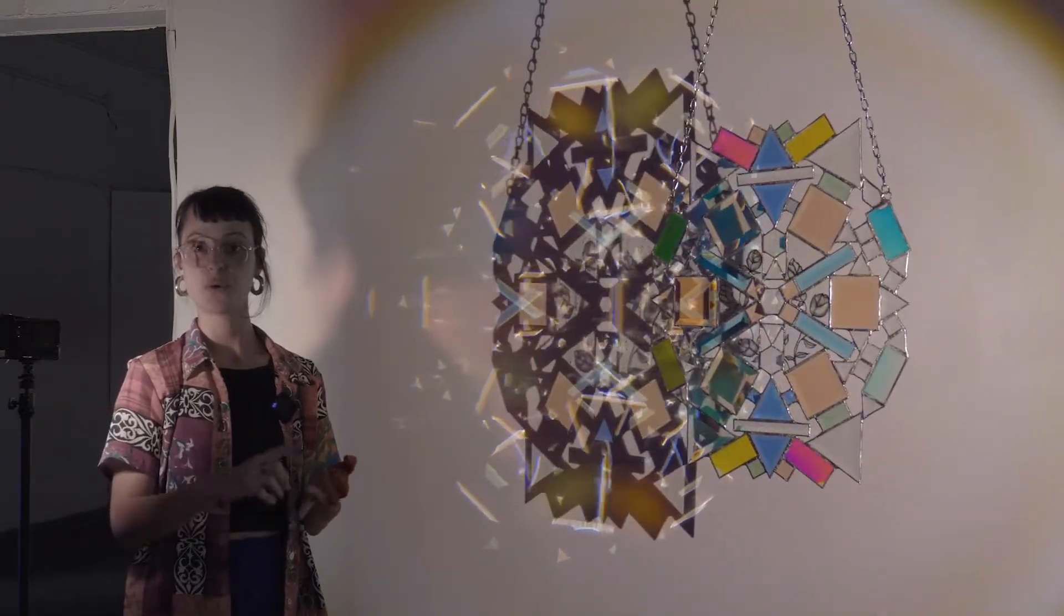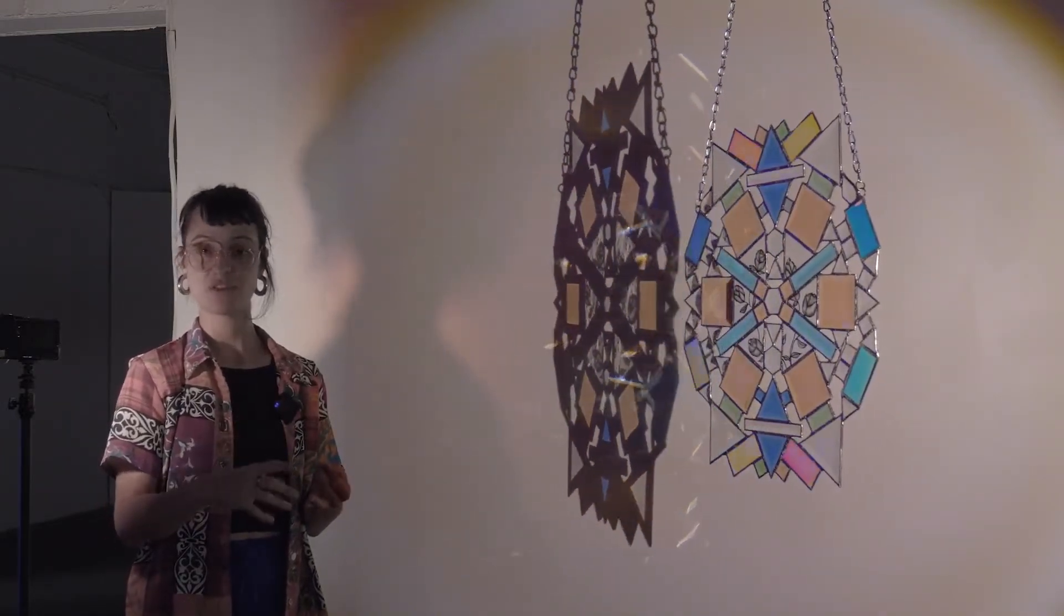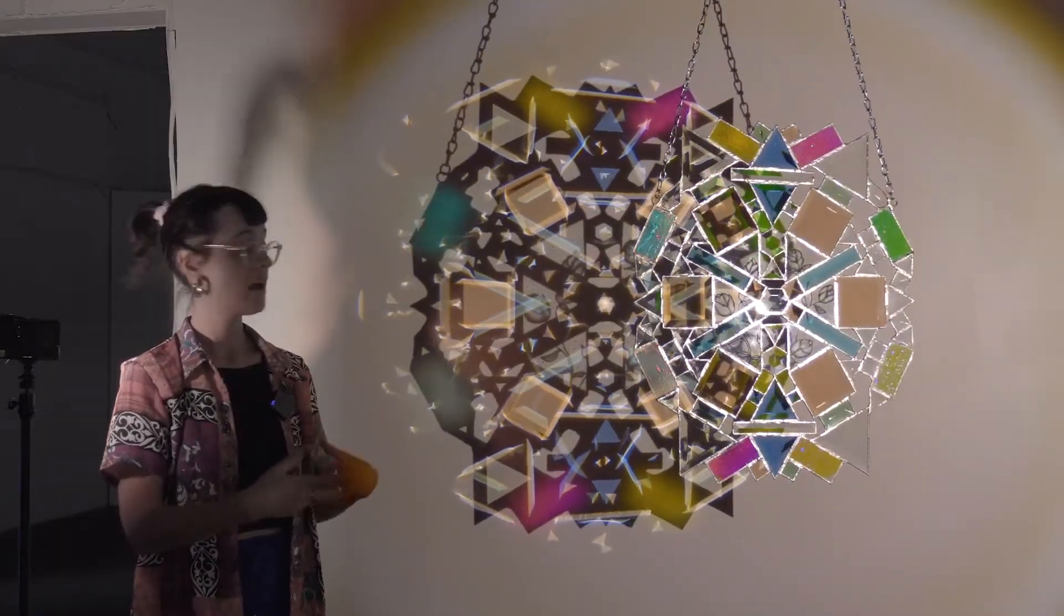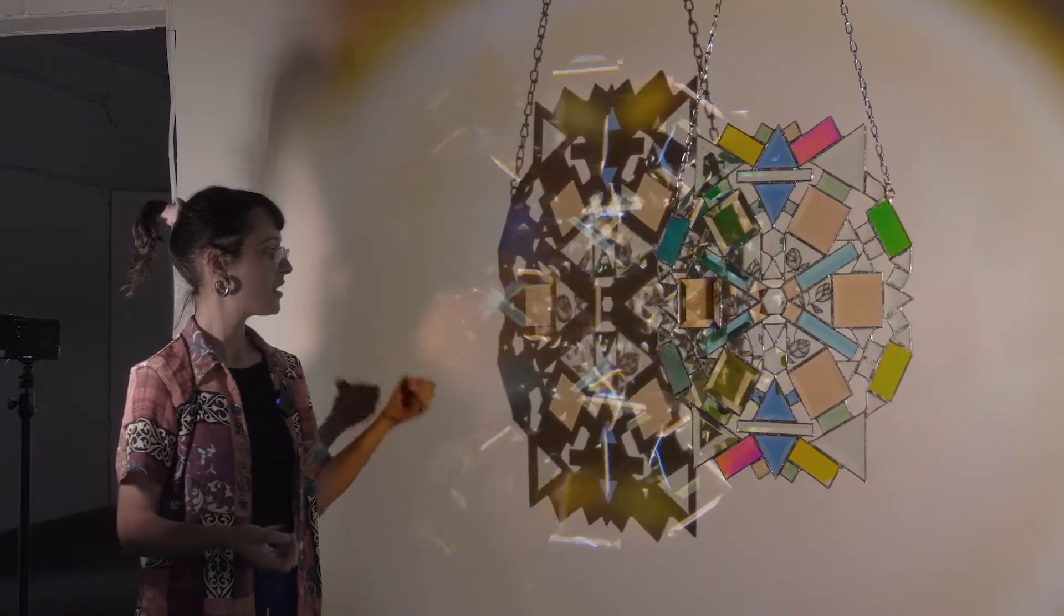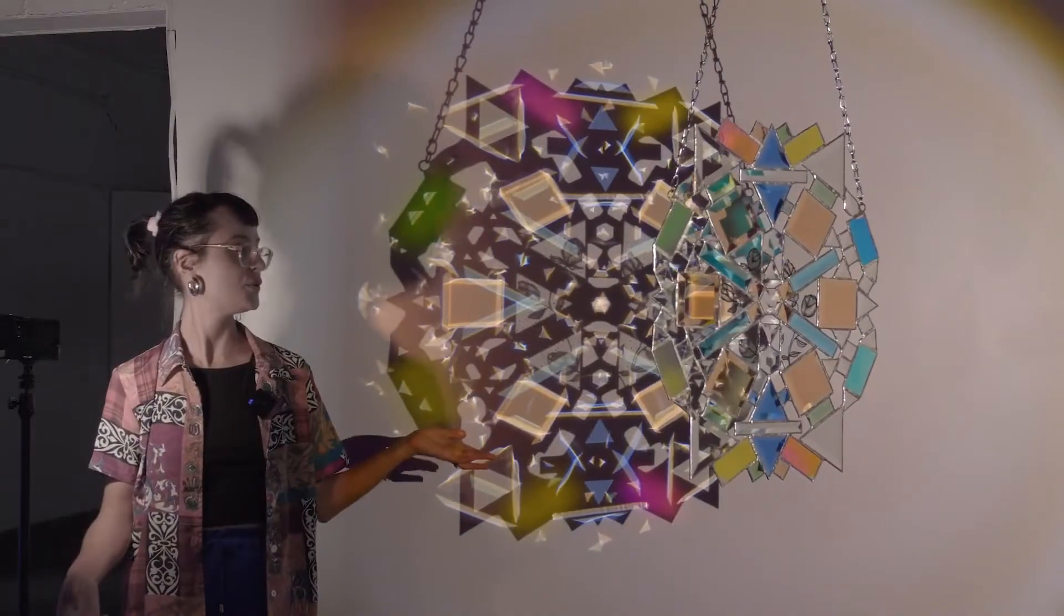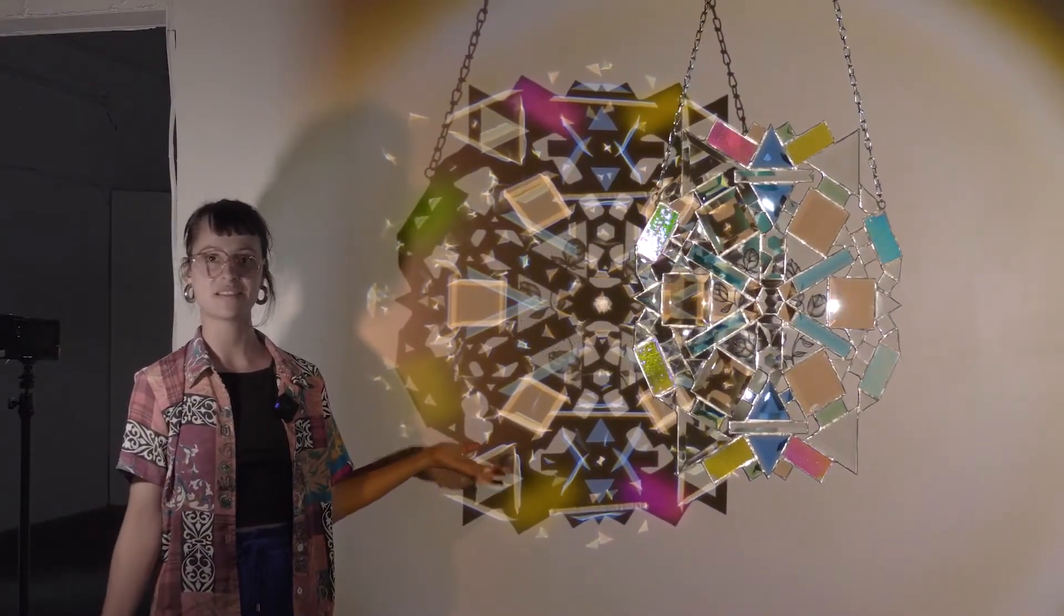So we have two 3D dimensions and the fourth is adding the movement. So having this piece spinning allows us to start understanding how we can represent shapes that come from the fourth dimension into two-dimensional spaces like a wall.